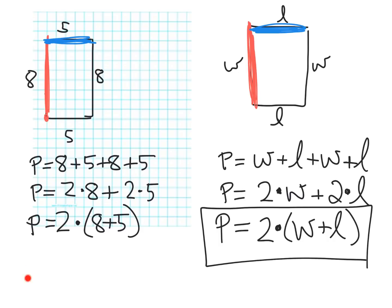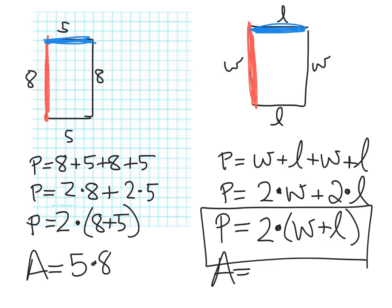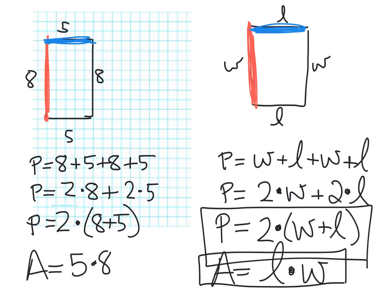For area: area is the idea of how many little squares are on the inside of the rectangle. This follows straight from the third grade modules on multiplication where they use the area model. So we know that the area of this rectangle is length times width. In this case, it would be 5 times 8, which is 40 square units. Over on the right side, our formula would be: Area equals L times W.